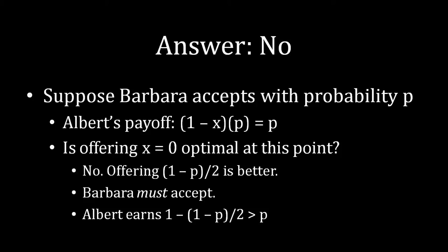Remember, p is a number that is not as big as 1. It is strictly less than 1. So if Albert offers Barbara this amount, 1 minus p divided by 2, that is a strictly positive amount, which means Barbara receives a strictly positive amount by accepting, which is more than she receives if she rejects. She receives nothing if she rejects. So Barbara must accept under those circumstances.